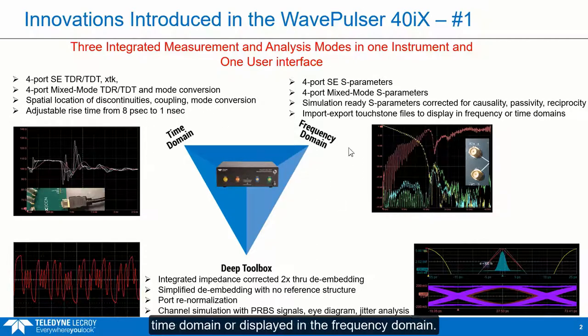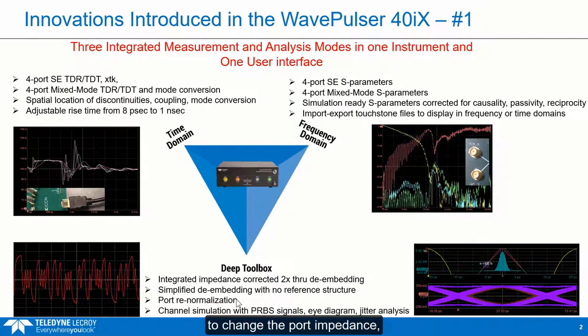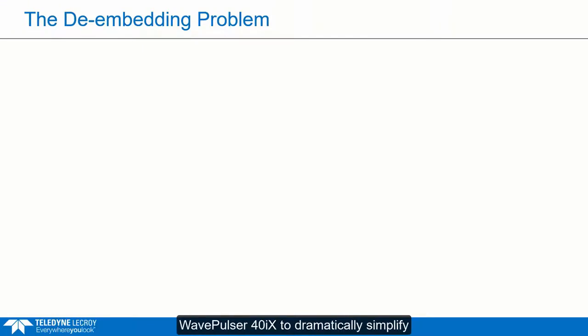In this brief video, I'm going to walk you through a couple of really important features that dramatically simplify the process of de-embedding, and also being able to change the port impedance so that we can look at structures that are uniform but not 50 ohms. Let's take a look at the de-embedding problem — what we're trying to achieve, how we do it, and how we use some of the features built into the WavePulsar 40IX to dramatically simplify this process.